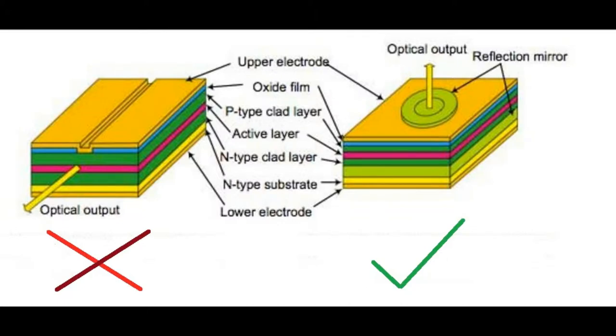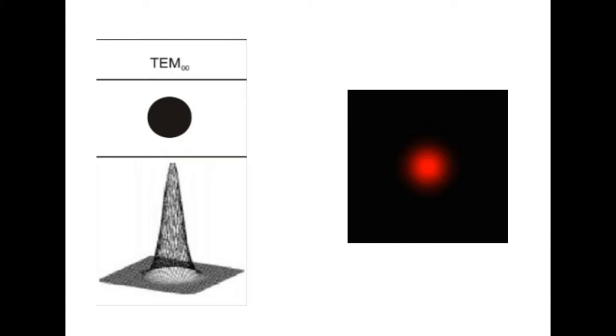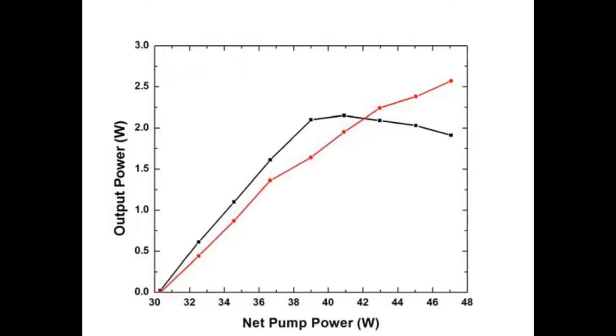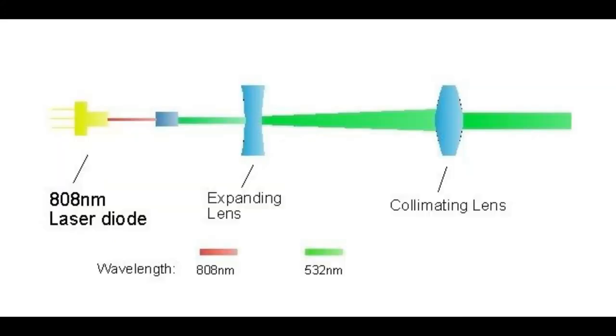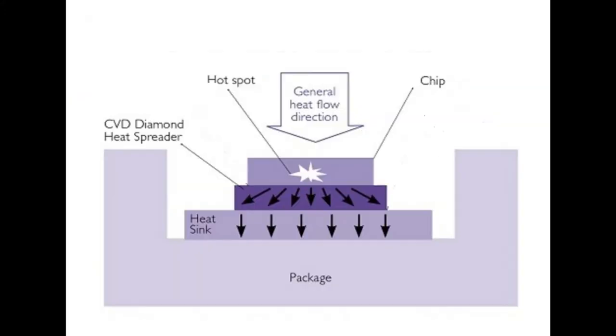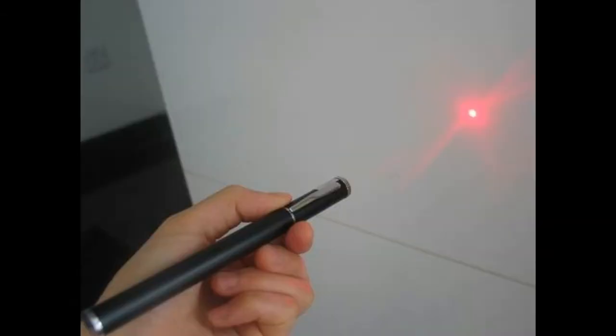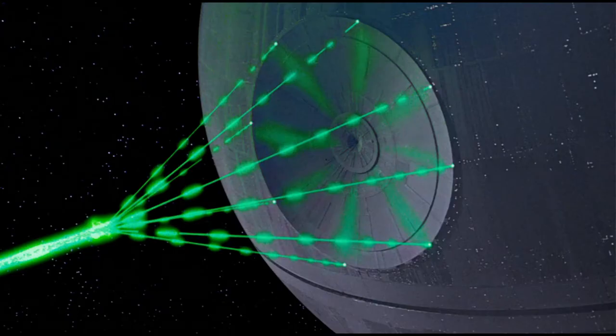Its surface emitting design allows the VECSEL to produce high output power while not compromising beam quality, which is excellent, near diffraction limited at TEM00. Devices have been designed using current power scaling techniques, which include manipulating the pump spot size on the chip and using more efficient thermal management with the chip to produce output powers of 10 milliwatts to 60 watts.